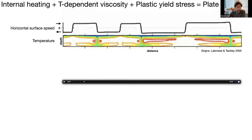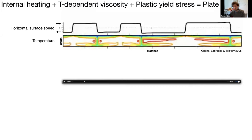What you see in the top is the horizontal speed at the surface of the model domain. Where the line is at minus one, there's a motion to the left at the surface, and then you see motion to the right, motion to the left, motion to the right. There are sharp transitions, and these are effectively plate boundaries between what are plates — we call them plates because they move coherently, rigidly.